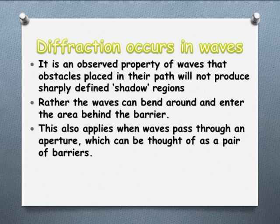Okay, so the waves bend around and they can actually enter into that area. And we get the same thing happening when waves pass through an aperture. An aperture is just a very small opening. So we can kind of think of that as a pair of barriers, a barrier on the left, a barrier on the right, moving around each of those barriers.